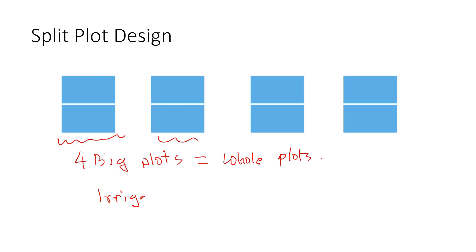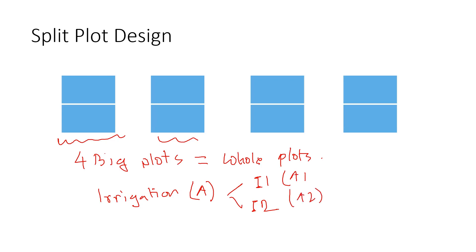The irrigation method is factor A. I have two levels of that: irrigation method one and irrigation method two — call them A1 and A2.